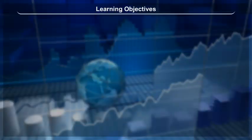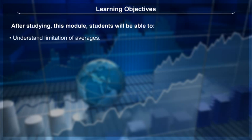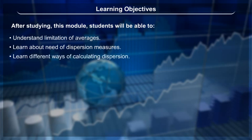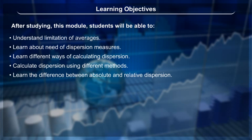Learning Objectives: After studying this module, students will be able to understand the limitation of averages, learn about the need for dispersion measures, learn different ways of calculating dispersion, calculate dispersion using different methods, learn the difference between absolute and relative dispersion, and know about the Lorenz curve.